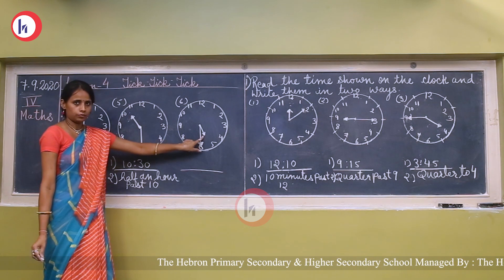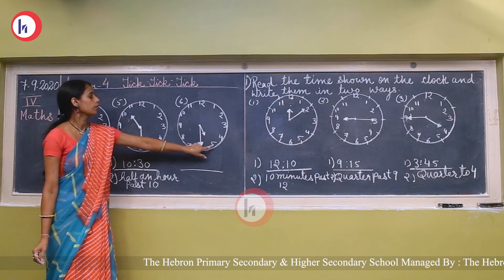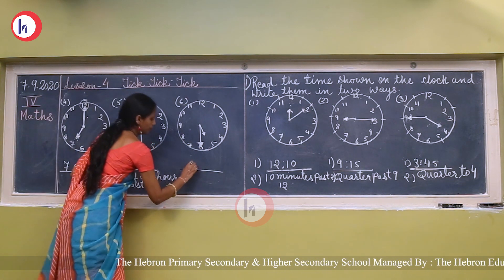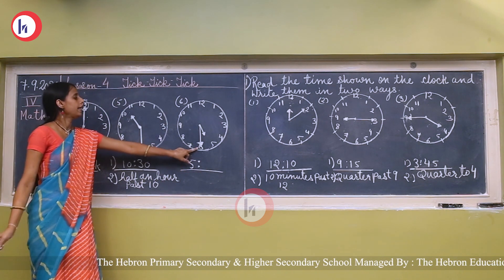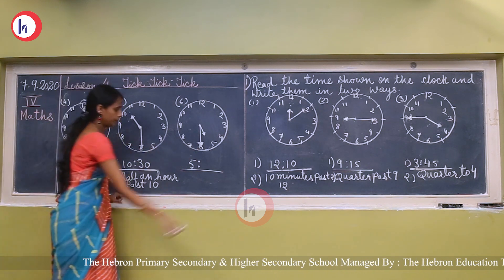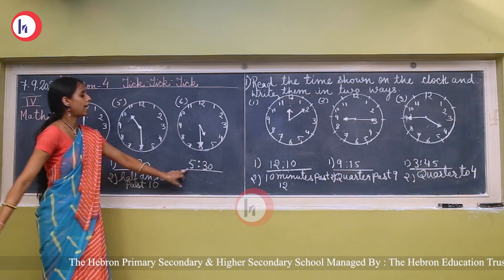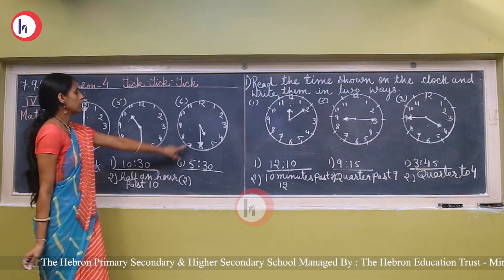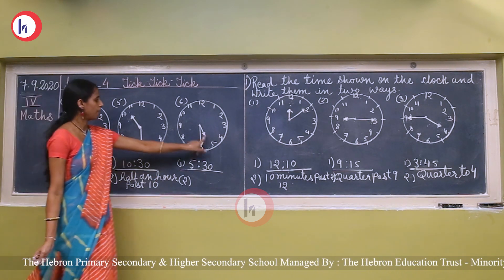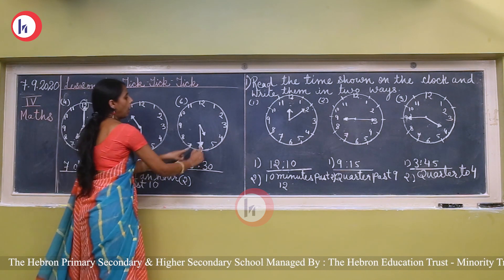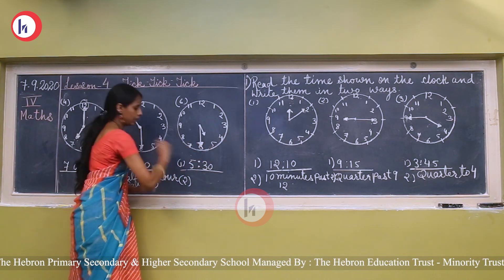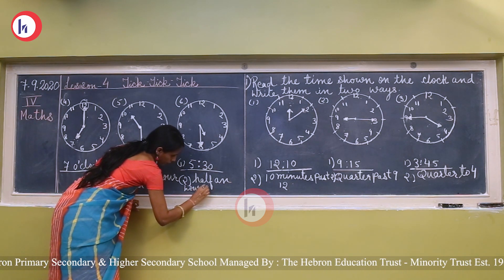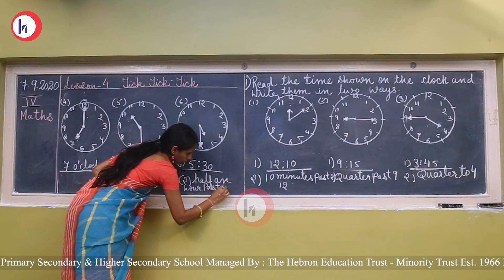Next clock: the short hand — the hour hand — is between 5 and 6. How many hours are completed? 5. And the long hand is on 6, so 5 sixes are 30. The time is 5:30. The second way to write: half an hour past 5. That means half an hour has been completed after 5.